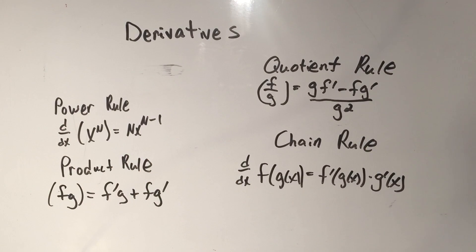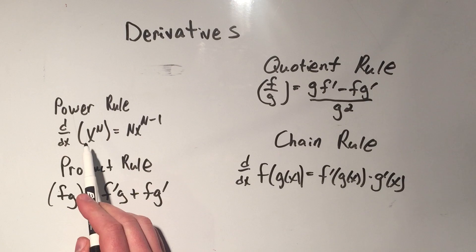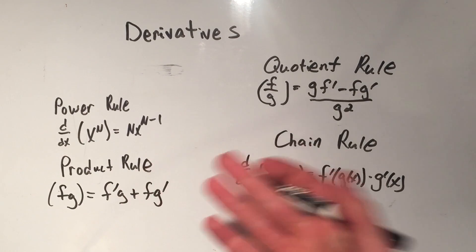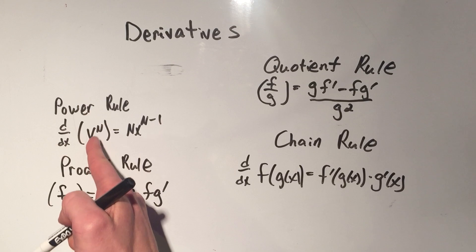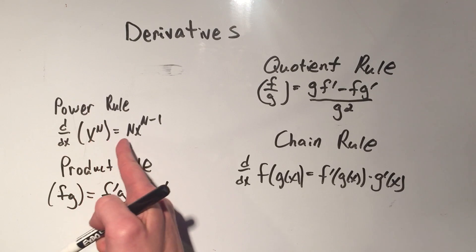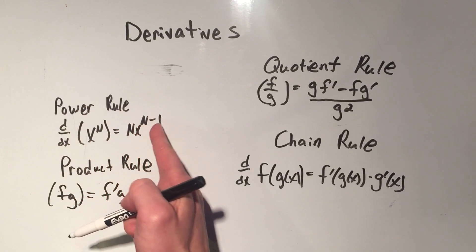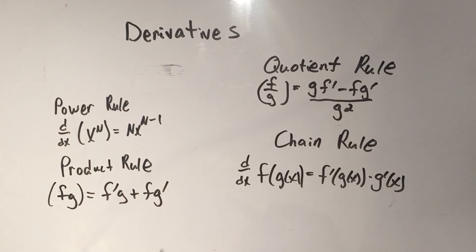The next shortcut is the power rule. That's when you have x to the n, or a variable to a constant power. It says if I take the derivative of x to the n, it's n times x to the n minus one.